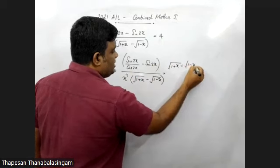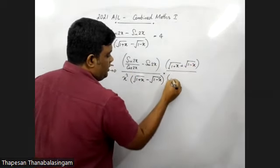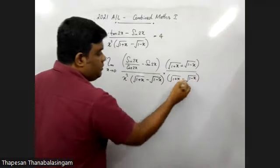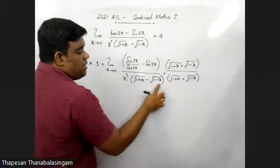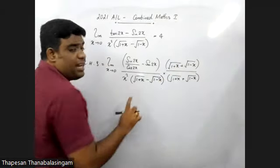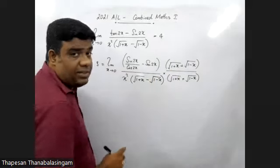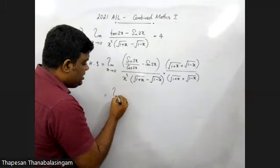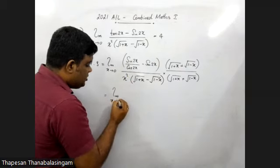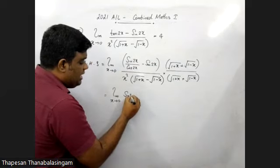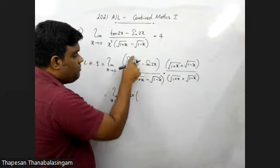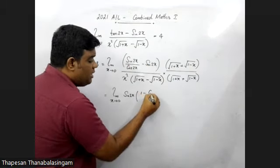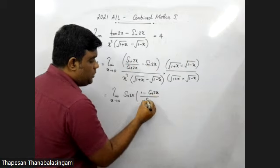Plus root of 1 minus x, minus sin 2x over cos x. Because the value is over cos x. Sin 2x over here, 1 over cos 2x minus 1, cos 2x. 1 minus cos 2x over sin 2x, cos 2x.